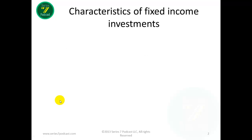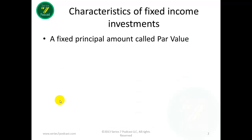There's debt and there's equity. What we're talking about here is the first video episode, which is talking about the debt side of a balance sheet. There are certain characteristics of fixed income investments. These include a fixed principal amount — just like in preferred stocks and common stocks, this is called par value. Bonds are issued at par value and they mature at par value.